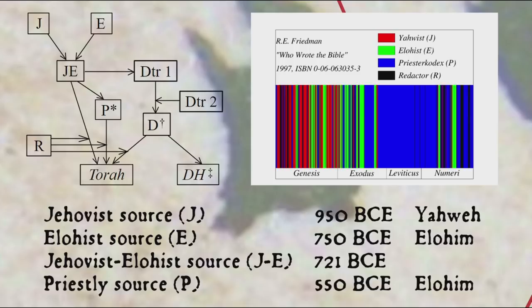And the JE source, itself a compilation made in 721 BCE from the Jehovah's source produced around 950 BCE — which uses the word Yahweh to refer to God — and the Elohist source, produced around 750 BCE, which uses the word Elohim. What is clear then is that the JE version was produced well before the captivity, whereas the priestly version was produced either during the exile or perhaps shortly thereafter.